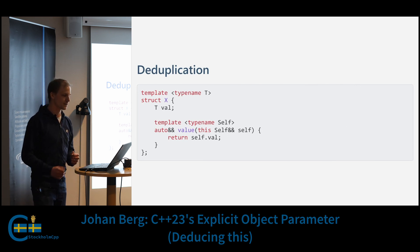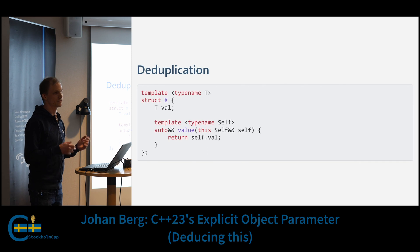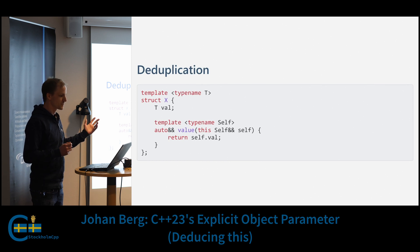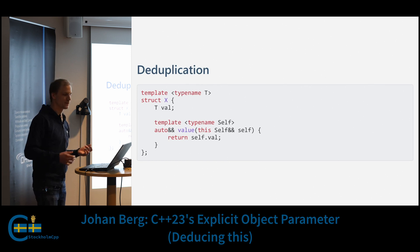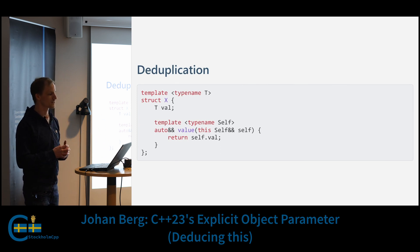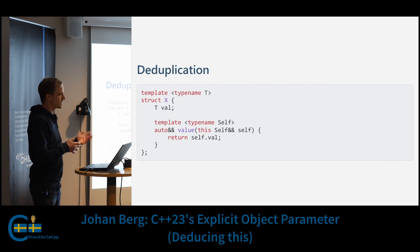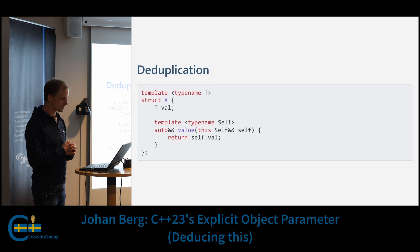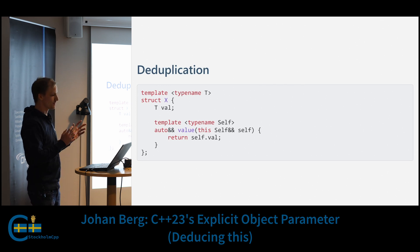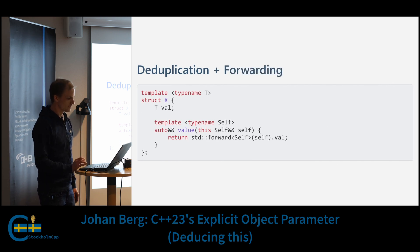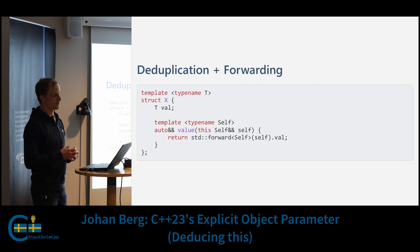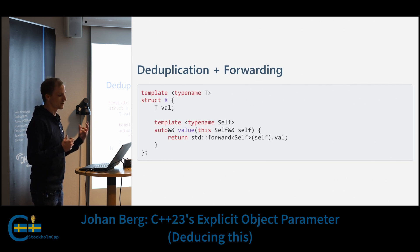I've also added return type deduction to let the compiler figure out the type of the return value. If we call this function on a mutable object we will get a mutable reference, so now we have a single function that does the same thing as the two functions on the slide before. To make this complete we could also add forwarding — so this will handle rvalue references correctly, and if we call this function on an rvalue object we will call move on the return value.